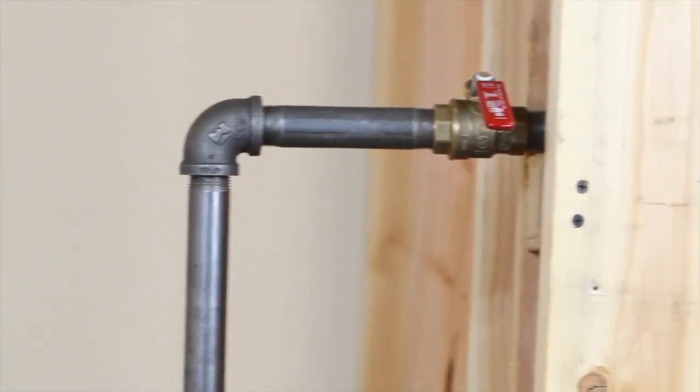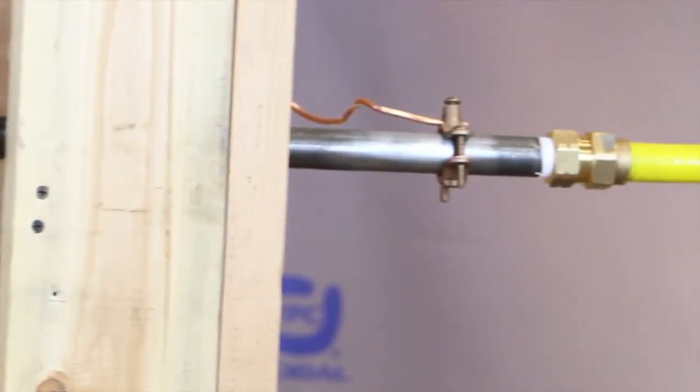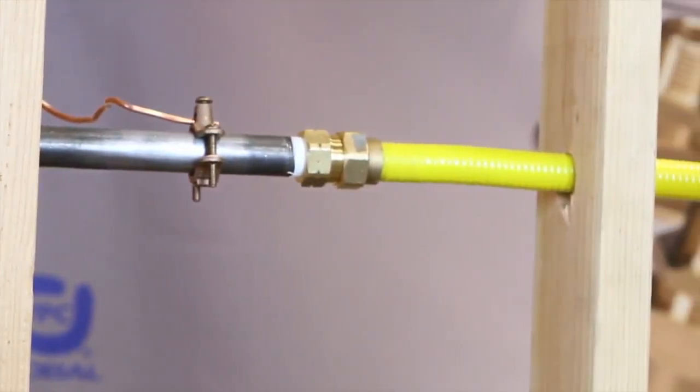Lightning does not have to strike a structure directly to cause damage. Conductive systems like piping or wiring can become energized indirectly by a lightning strike.